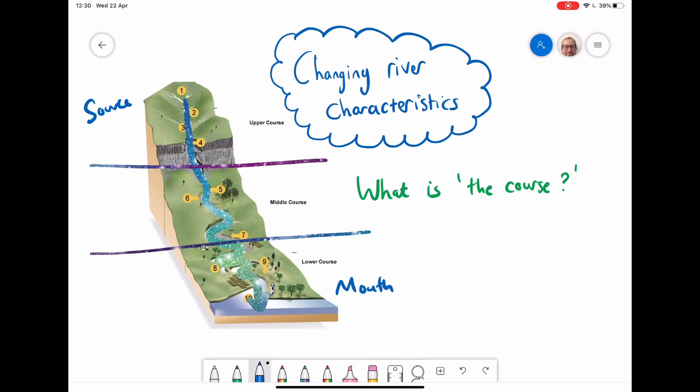And as you can see, the river will change dramatically from source to mouth in lots of different characteristics which I'll go over. But the first thing you need to know is the course is that path of the river from source to mouth.